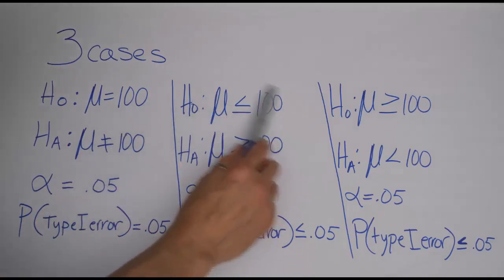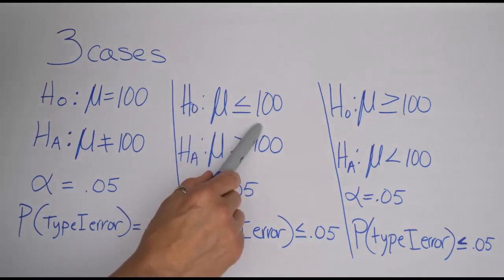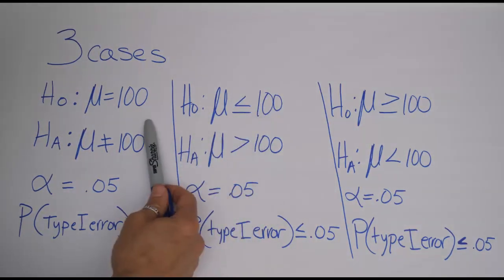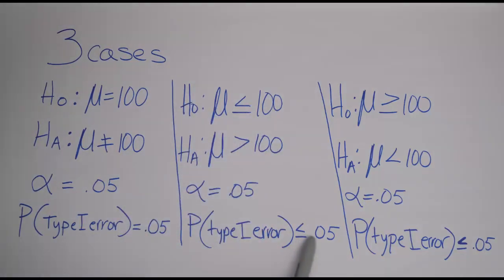But that really is only true when your null hypothesis is something simple, like the mean is equal to 100, when it's essentially stating a range of values that the mean is either less than or equal to 100, so it could be anything from 100 all the way down to whatever. In that scenario, then you have this probability of a type 1 error, which is less than or equal to alpha, and the same is true over here.